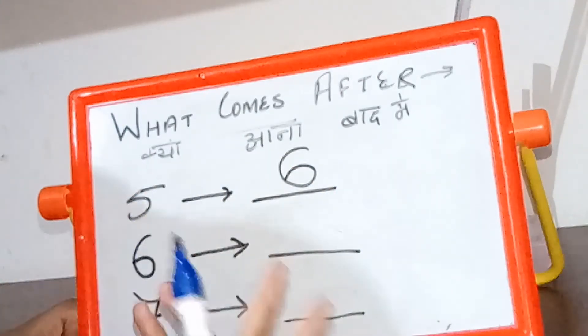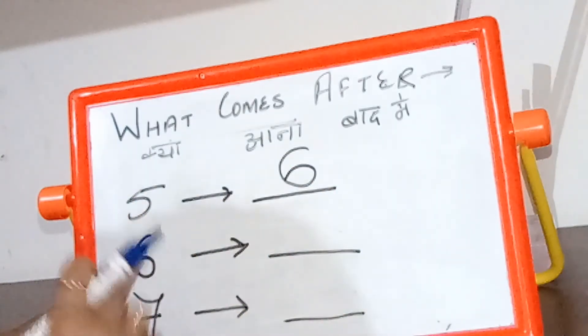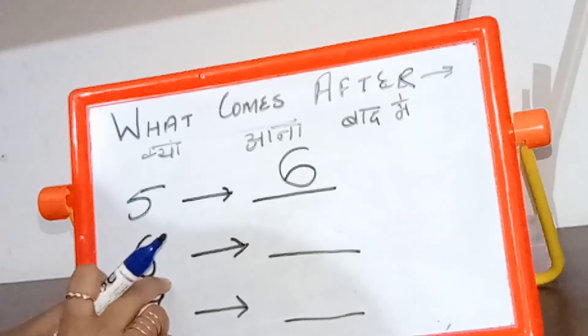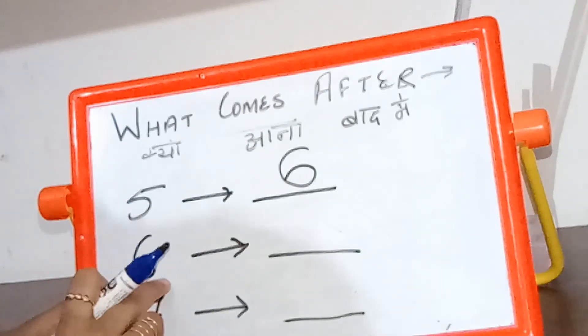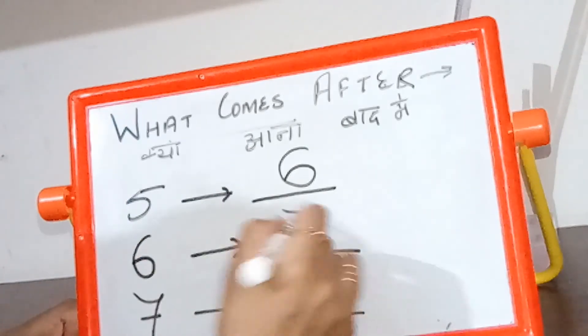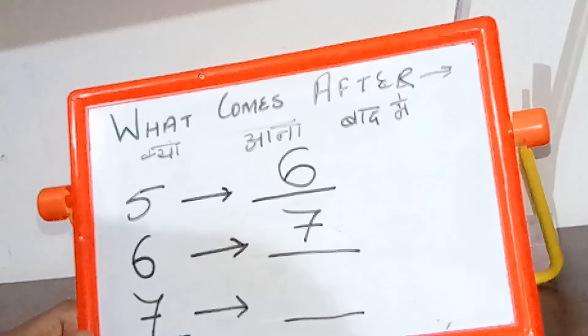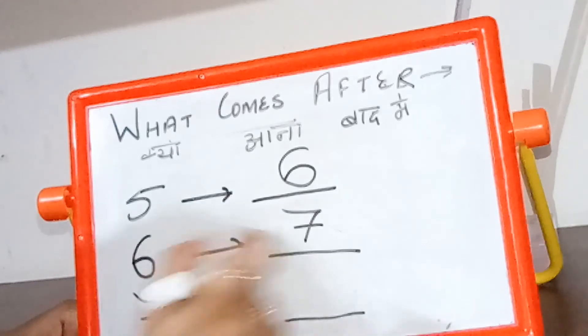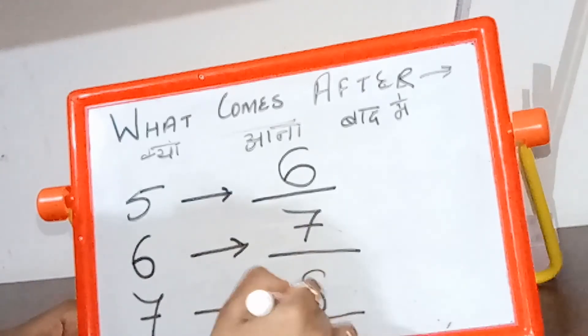And six ke baad kya aata hai? Tell me fast. Seven. Yes. And seven ke baad kya aata hai? Eight.